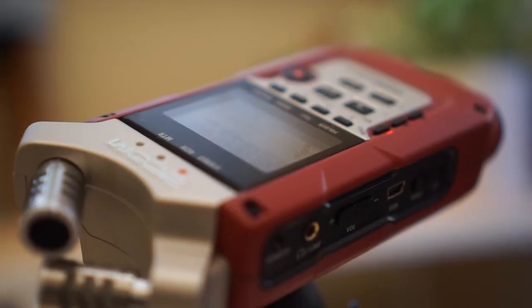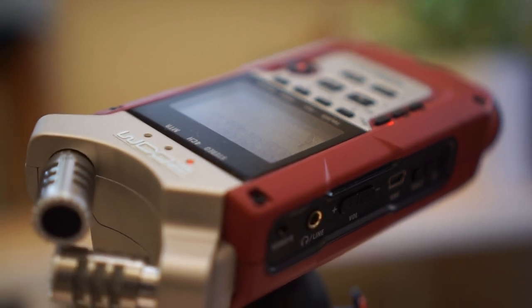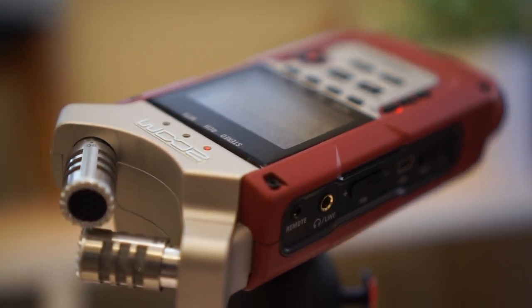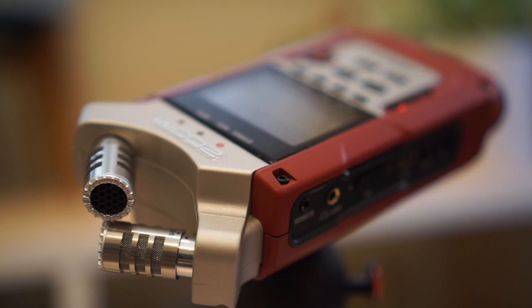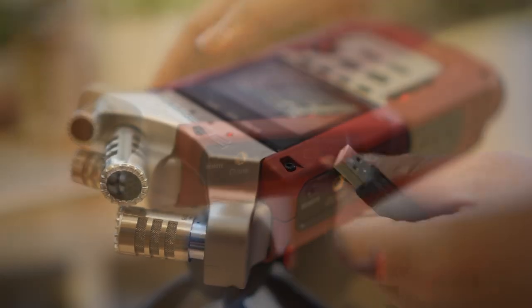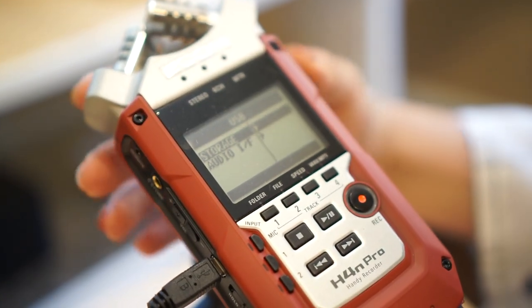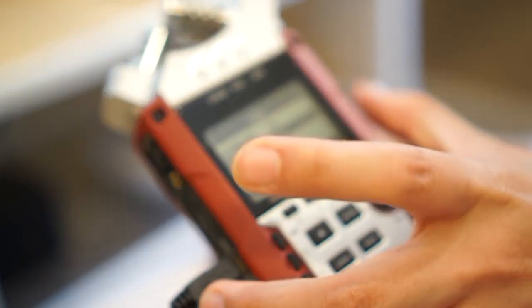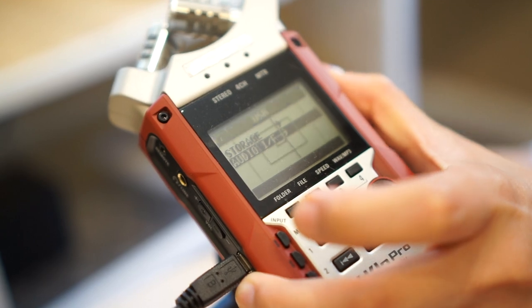Next is my mic. I am using the Zoom H4n Pro. I love that it could function both as a good quality cardioid mic that records in stereo mode and an external recorder. To use it with my MacBook, I connect it with the USB cable it comes with and use it as an audio interface. After connecting, a screen should pop up on the Zoom to connect to my MacBook.